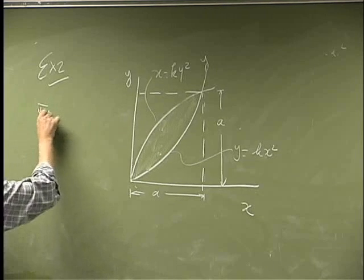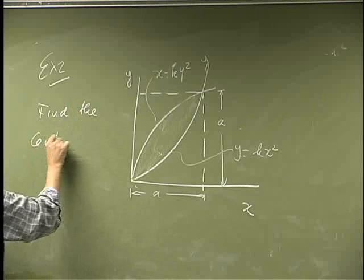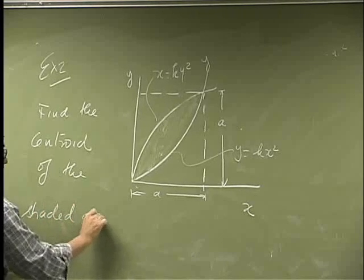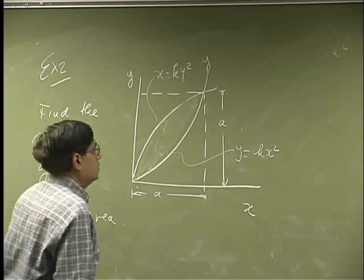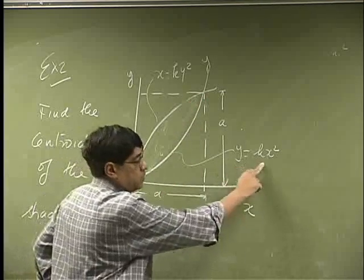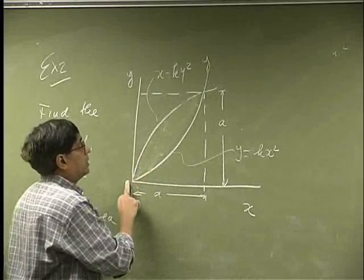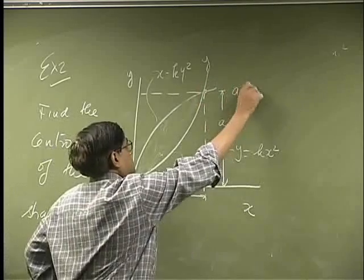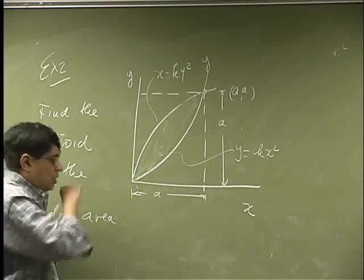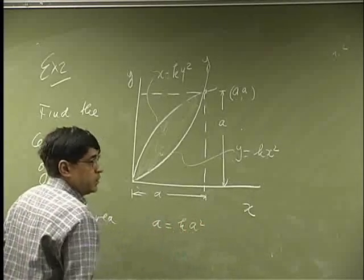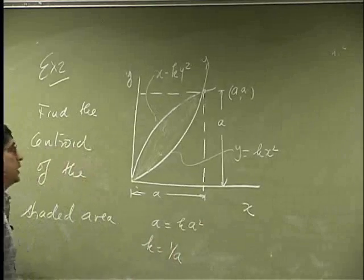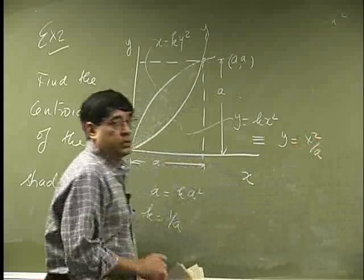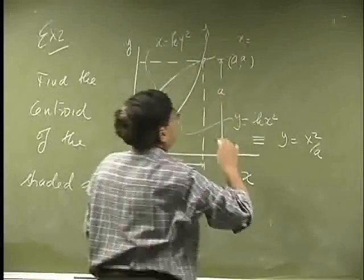The question is to find the centroid. This point is drawn such that a equals k times a squared, so k is going to become 1 over a. This equation will be y equals x squared over a.